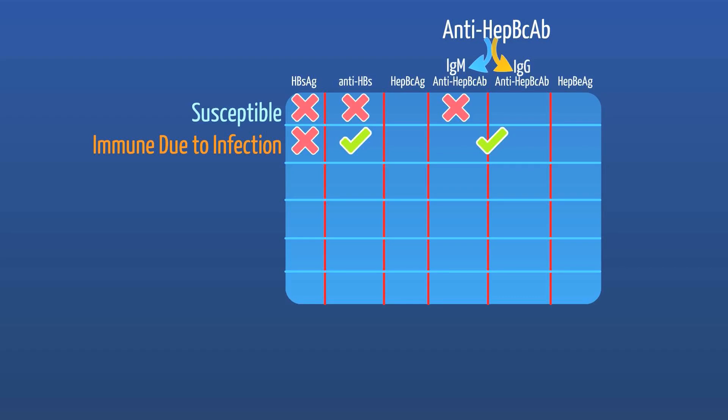What if the entire hepatitis panel is negative except for the hepatitis B surface antibody? If all antigen markers are negative, no infection is present. If the core antibody is negative, there was no previous exposure. With only hepatitis B surface antibody being positive, this means the patient is immune to hepatitis B due to vaccination. This is really important to remember.